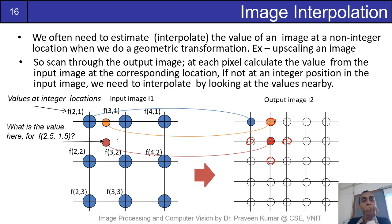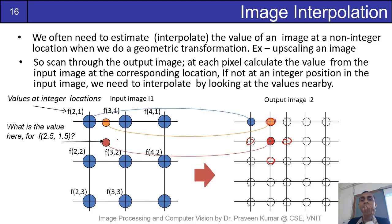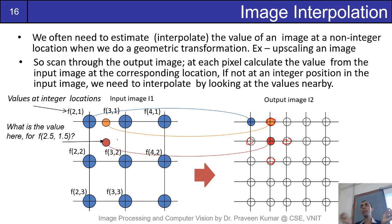This need arises many times — not only for rescaling, but also when we want to rotate or stretch an image. The new image coordinates, if you try to map them to the original image, may not map to integer locations. They may map to some non-integer locations. So at that time we will have to do some kind of image interpolation.